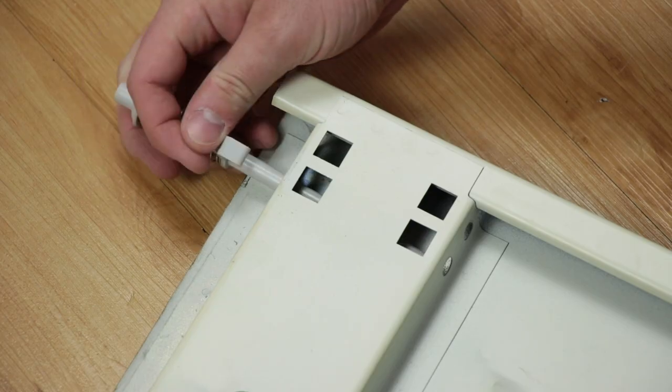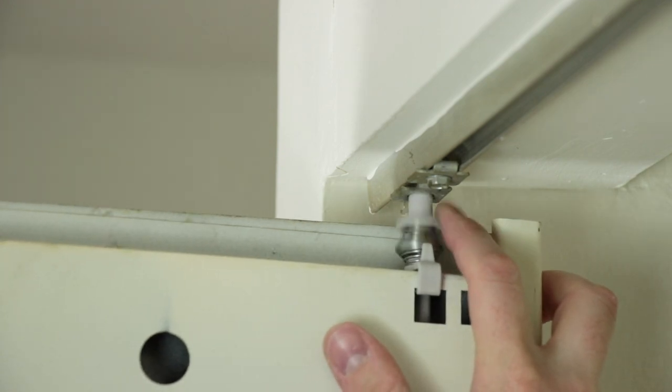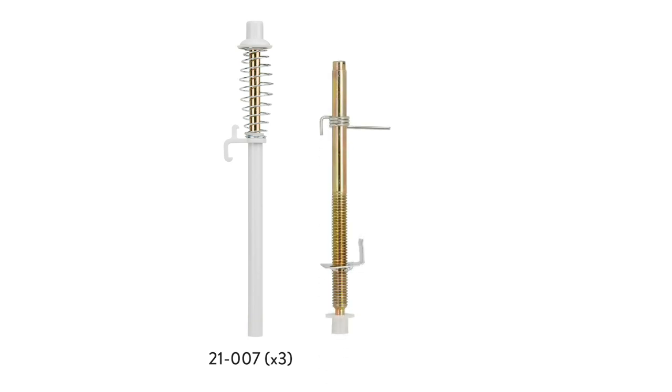Today we'll be demonstrating how to install top and bottom bifold pins in a metal bifold closet door. In this video, we'll be using Swisco's 21-007 bifold door guide pin, 21-001 pivot assembly, and the 21-154 pivot rod clamp.